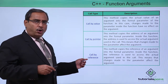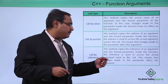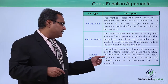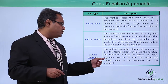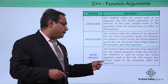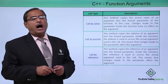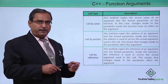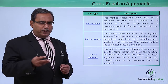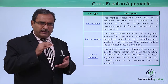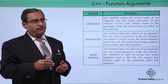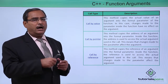The next one is call by reference. This method copies the reference of an argument into the formal parameter. Inside the function, the reference is used to access the actual argument used in the call. This means that changes made to the parameter affect the argument as well. In the case of call by reference, the reference of the argument is passed to the parameters, so whatever changes are made within the function body in the parameters, those updates can also be observed from the caller function in the argument variables.